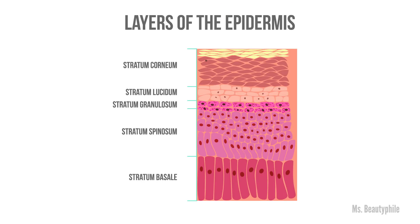In our body, ceramides are produced in the stratum granulosum, which is below the stratum corneum. They originally appear as phospholipids, and as they work their way up to the stratum corneum, there are enzymes that convert them into ceramides.